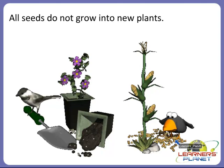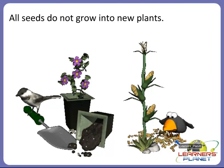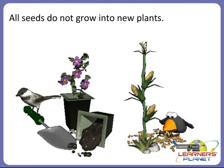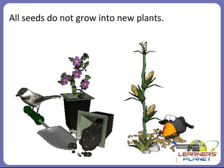We will discuss all the factors a seed needs to grow into a new plant. Always remember: there is an outer covering called the seed coat which protects the baby plant inside the seed. The seed coat also has a tiny hole through which the seed gets water. The seed leaves are also called cotyledons, and their function is to store food for the baby plant.